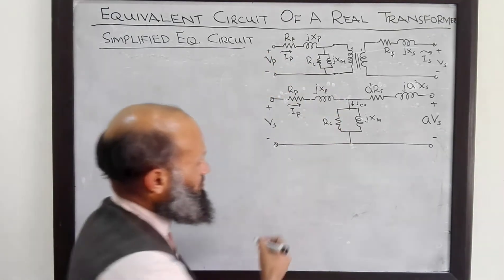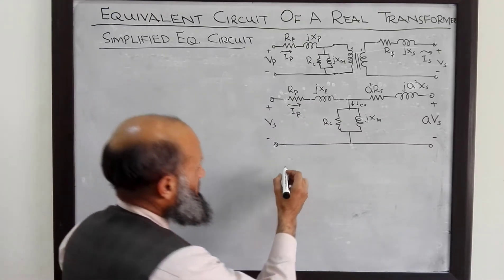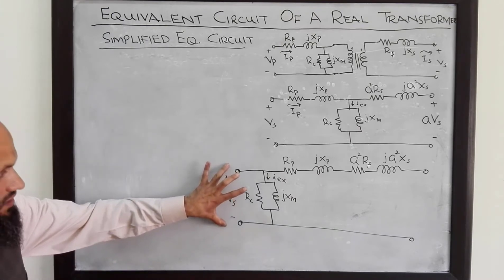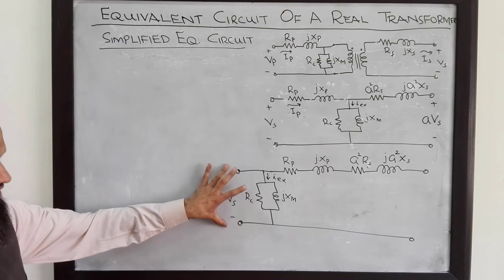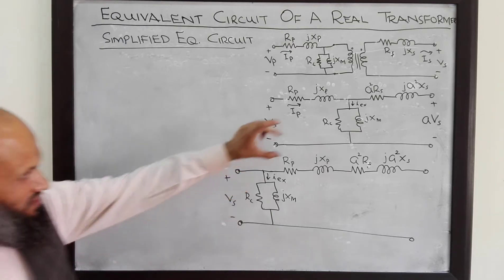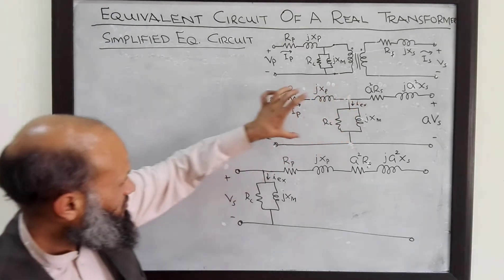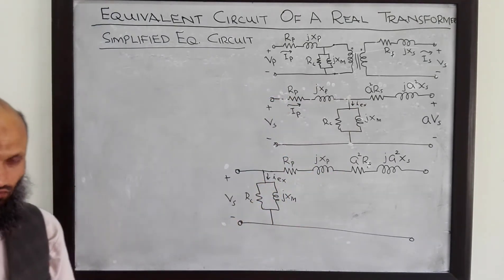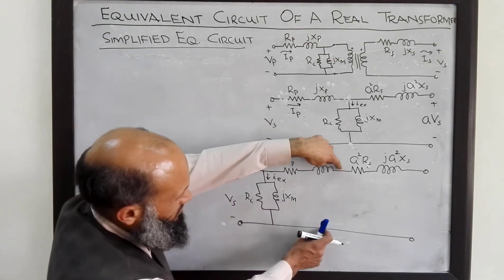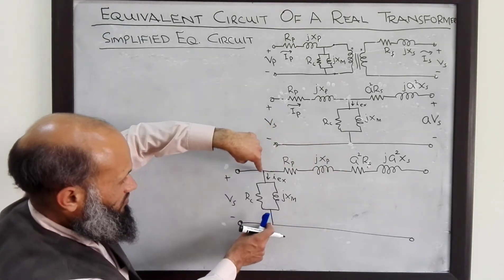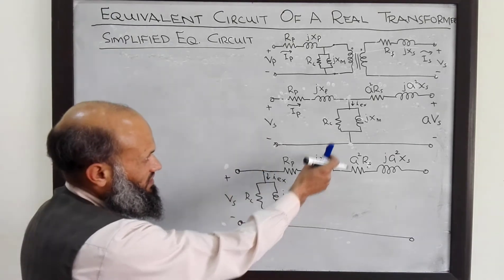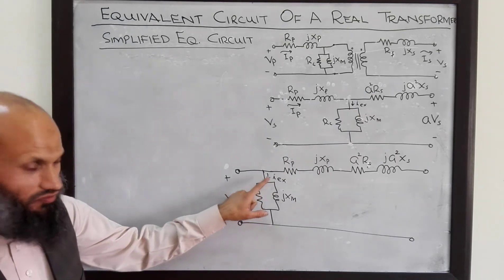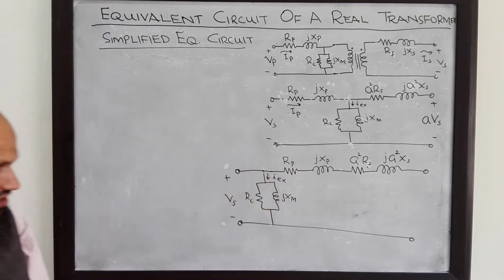So we can redraw this equivalent electrical circuit. What we have done is moved this branch from this location to this location — from here to here. This does not cause a significant difference because the voltage over here is approximately the same as the voltage over here. Whatever current is flowing through this branch, almost the same current will be flowing if I sketch it over here.